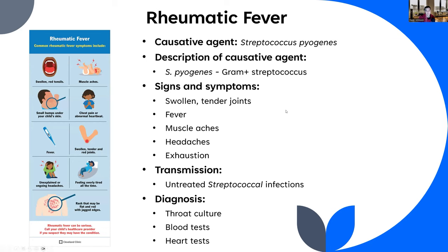Rheumatic fever is caused by Streptococcus pyogenes. As discussed in previous videos on bacterial pharyngitis, if streptococcal infections are left untreated, they can cause problems later — this is one such case. Streptococcus pyogenes is a common cause of upper respiratory infections like strep throat, and if left untreated it can spread to the heart, which is what happens in rheumatic fever.